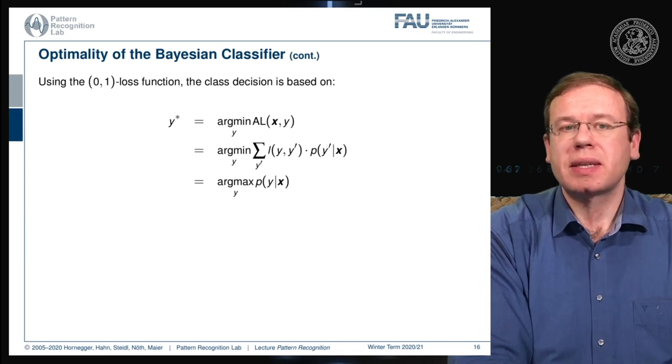Then you can simply flip this minimization into a maximization of the probability of the correct class. So this is the reason why we find the solution for our optimal class as the maximization of the correct probability.